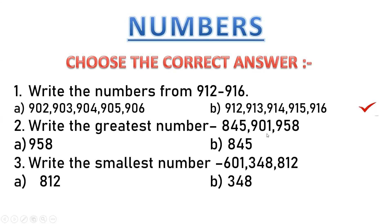Now what we have to do? We have to take the second digit also. This is starting with 0, but this is starting with 5. So this is 901, but this is 958. This is only 1, but this is 58. This is 0, but this is 5. So definitely, which is the biggest? 958 is the biggest number. Understand? So this is the biggest number.